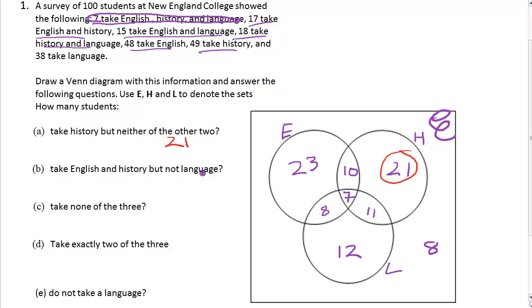Take English and History but not Language. We don't want the all-three group. The group that takes English and History but not Language is these 10 here. We don't want the 7 there, so that's 10.